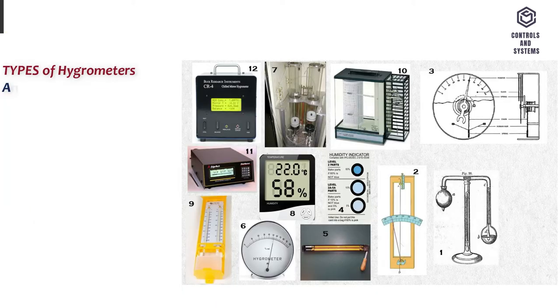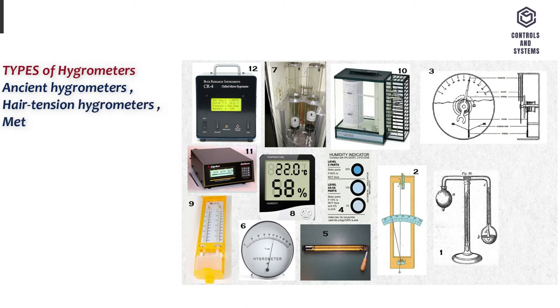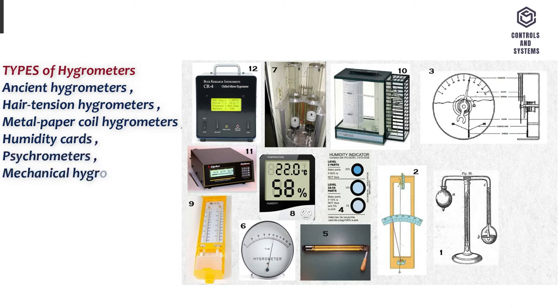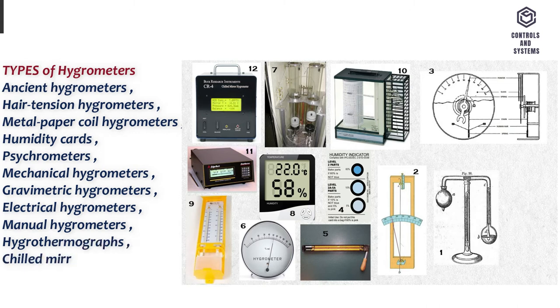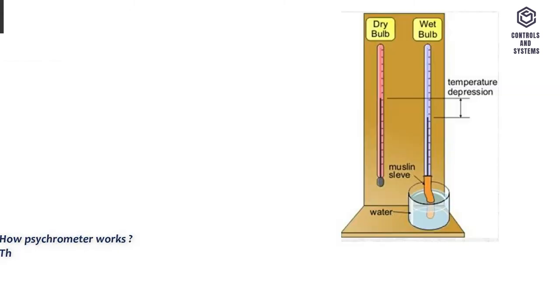Types of Hygrometers: Ancient Hygrometers, Hair Tension Hygrometers, Metal Paper Coil Hygrometers, Humidity Cards, Psychrometers, Mechanical Hygrometers, Gravometric Hygrometers, Electrical Hygrometers, Manual Hygrometers, Hygrothermographs, Chilled Mirror Hygrometers, Research Hygrometers.